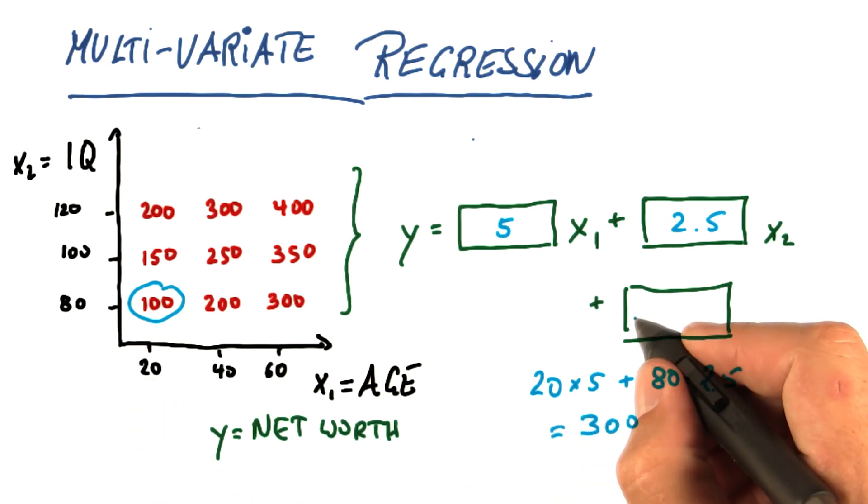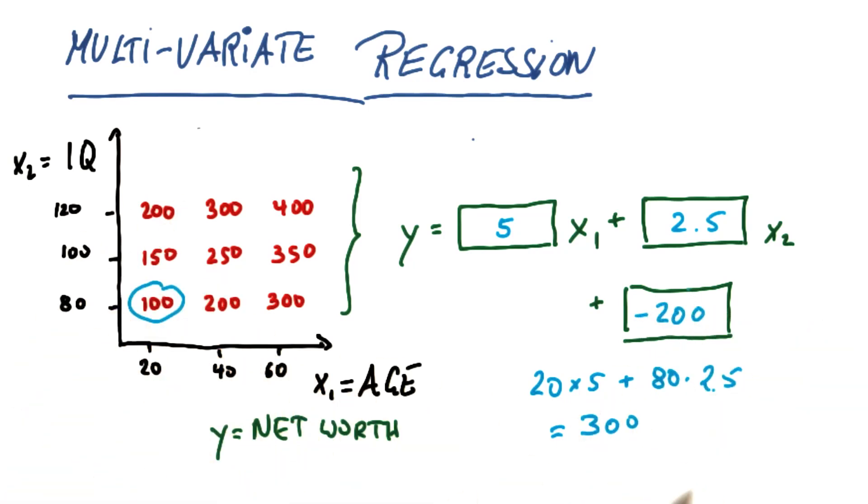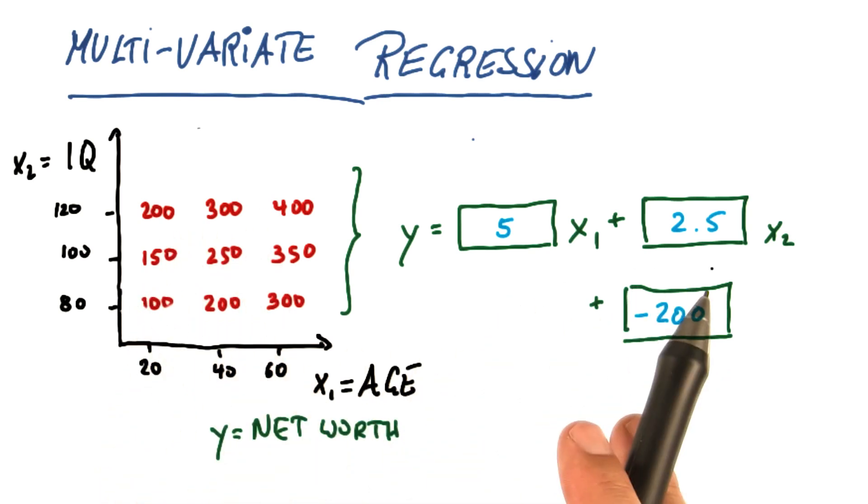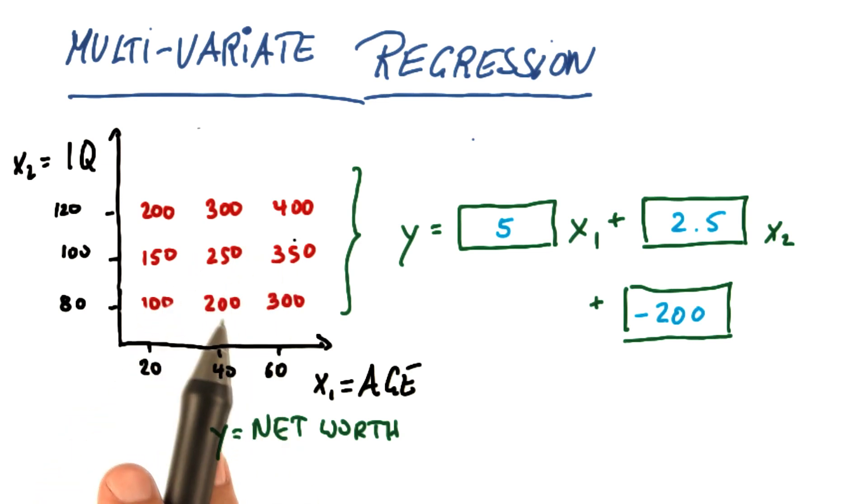so we have to subtract minus 200. And it turns out the way I made this table, this is actually the correct equation. So you can check any value in the table over here and you'll find that this specific linear equation exactly explains the value over here. Now that's an artifact,